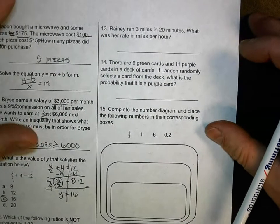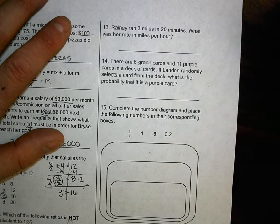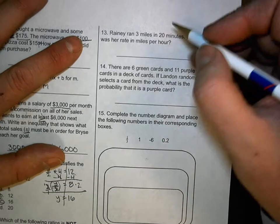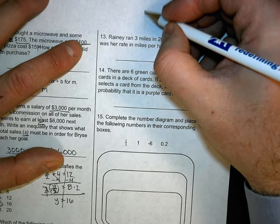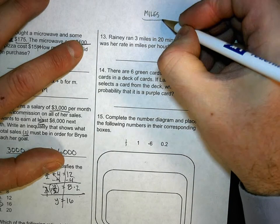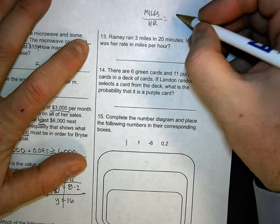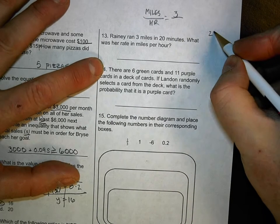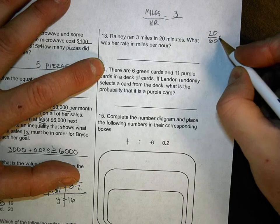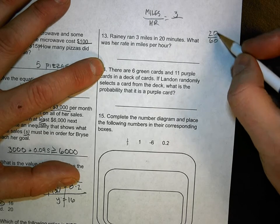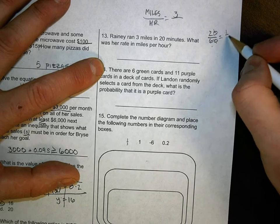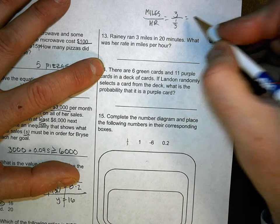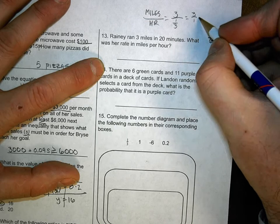All right, number 13. Rainy ran 3 miles in 20 minutes. What was her rate in miles per hour? This is an old rate question. In rate, what we need to do is, first of all, is decide what we're figuring out. I'm going to use the top of my page because I can. So we're looking for miles per hour. So we can fill in the parts. So the miles was 3. Now 20 minutes is not an hour, but it's a part of an hour. 20 minutes is 20 of 60 minutes total. So we can simplify that fraction. What's simplified? Well, I can get rid of the zeros because they both got zeros. 2 over 6 is 1 third. So it is 3 over 1 third hour.